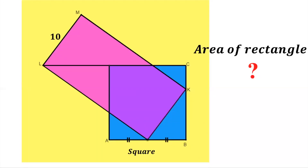Welcome to my YouTube channel. Let's consider this question: we have a square and a rectangle. The rectangle is inclined at the midpoint of the square. The breadth of the rectangle is given as 10, and we are supposed to find the area of the rectangle.